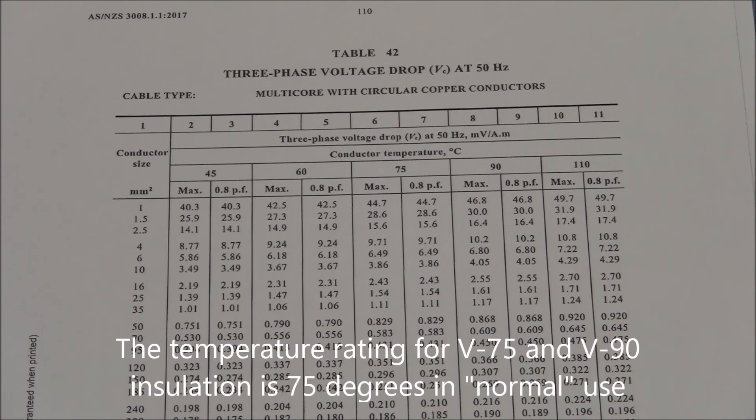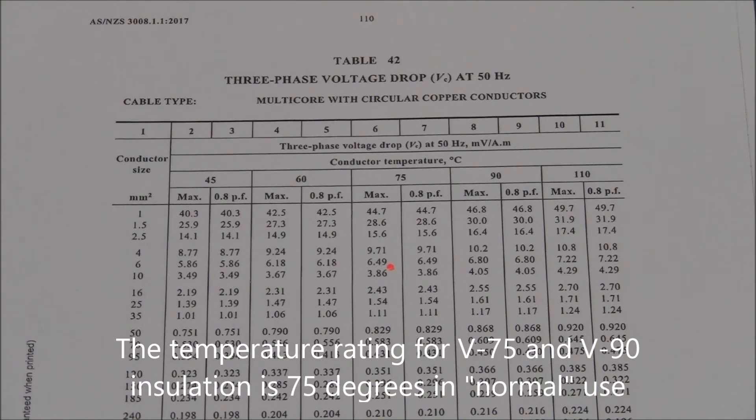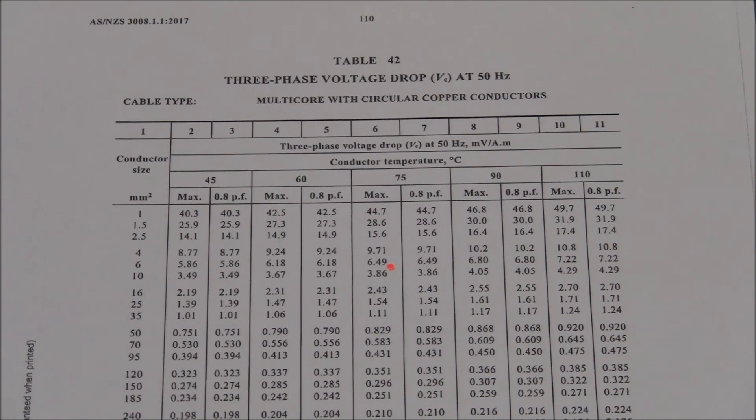Column 6 is for 75 degrees. 4.15 millivolts per ampere metre falls between 6.49 and 3.86. This means that 6 millimetre square has too large a value of voltage drop, so it will need to move down the list to 10 millimetre square.